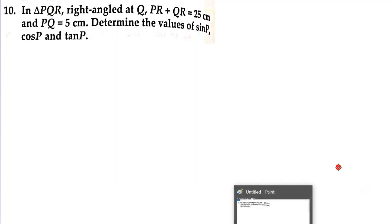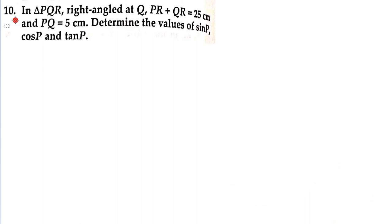Next question. What has been said here? In triangle PQR, right-angled at Q, PR plus QR is equal to 25, PQ is equal to 5. Determine the values of sin P, cos P and tan P.